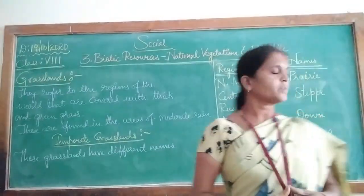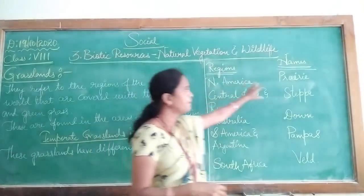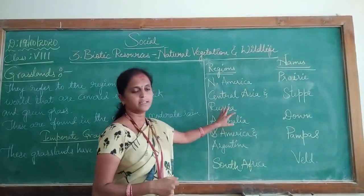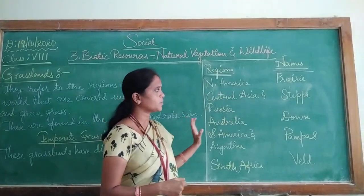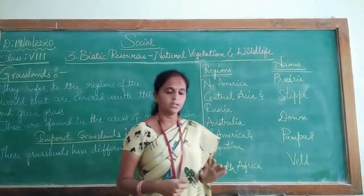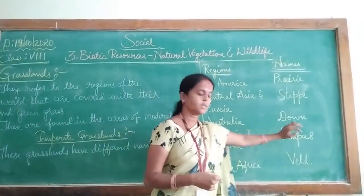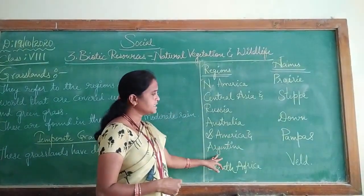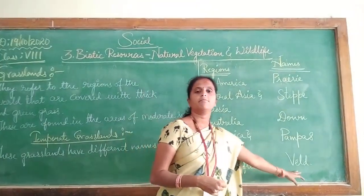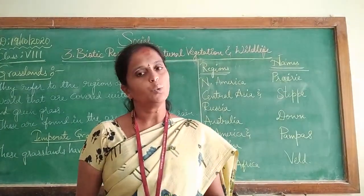Temperate grasslands of North America are known as prairies. In Central Asia and Russia, they are known as steppes, and they are also known as the granaries of the world. In Australia, they are known as downs. In South America and Argentina, they are known as pampas. In South Africa, they are known as veld.